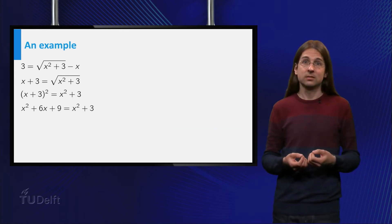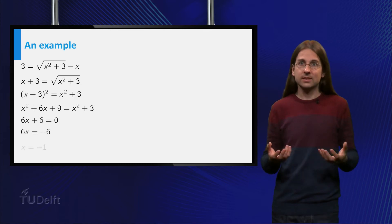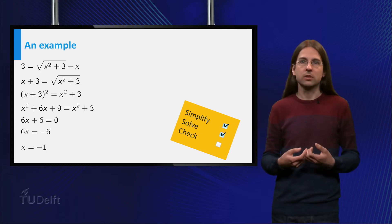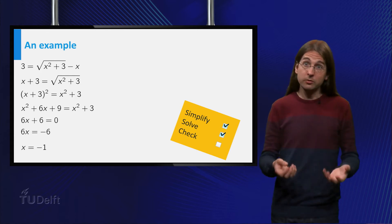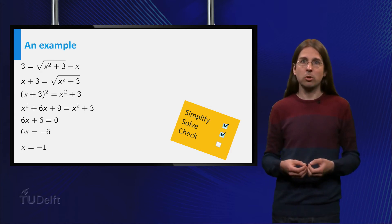Expanding the brackets and simplifying gives us 6x plus 6 equals 0. The solution is x equals minus 1. We solve the equation and the final step is to check this solution in the original equation.